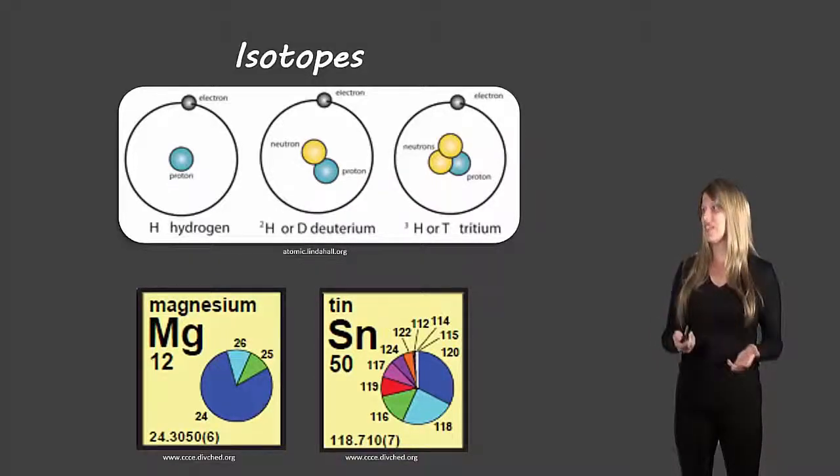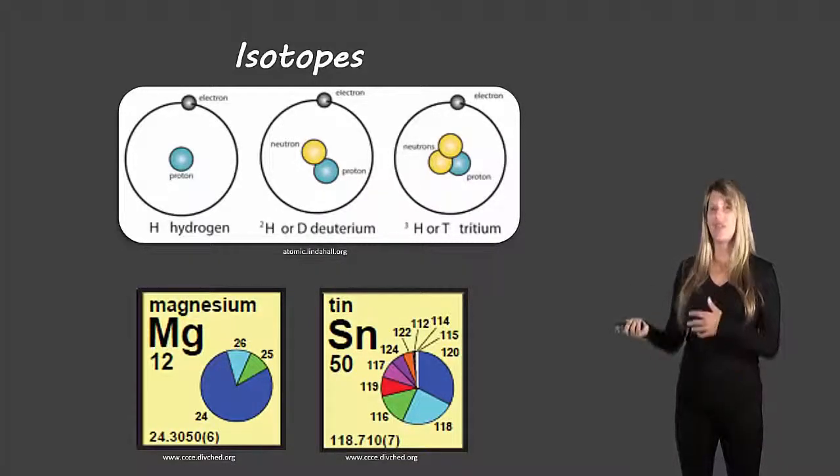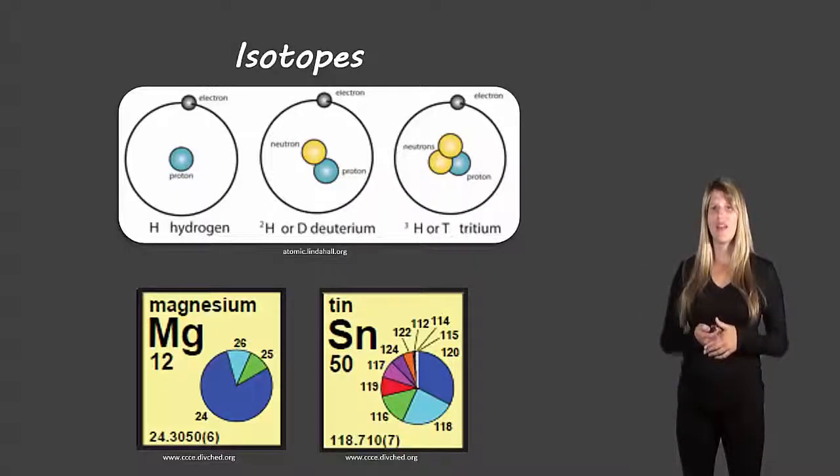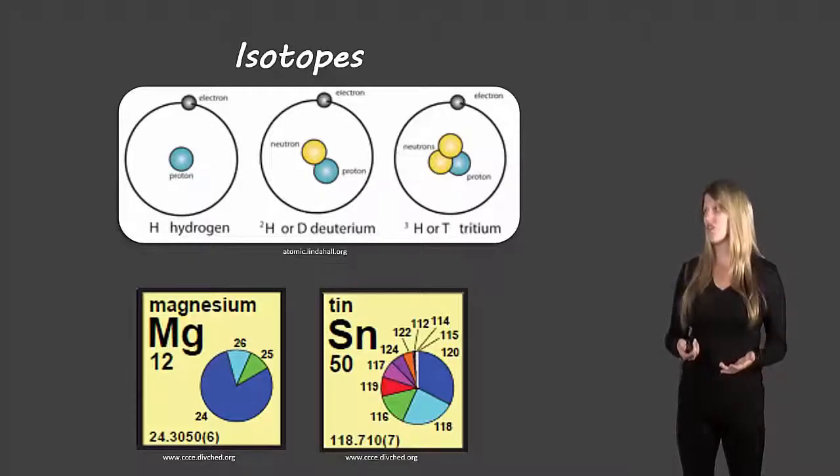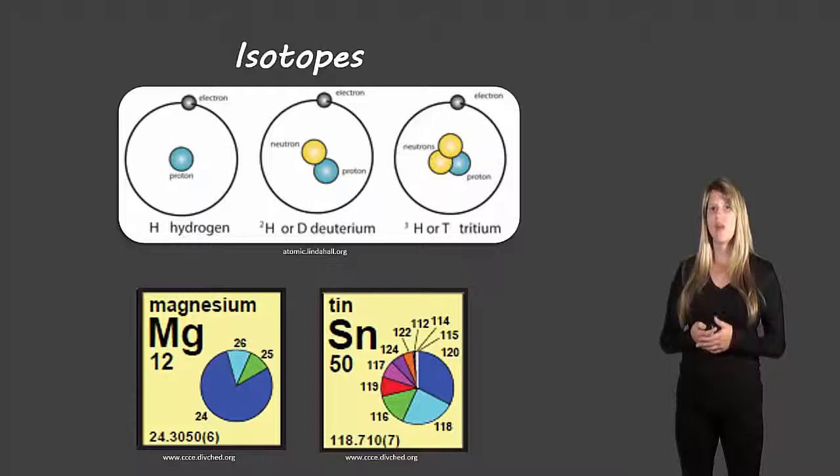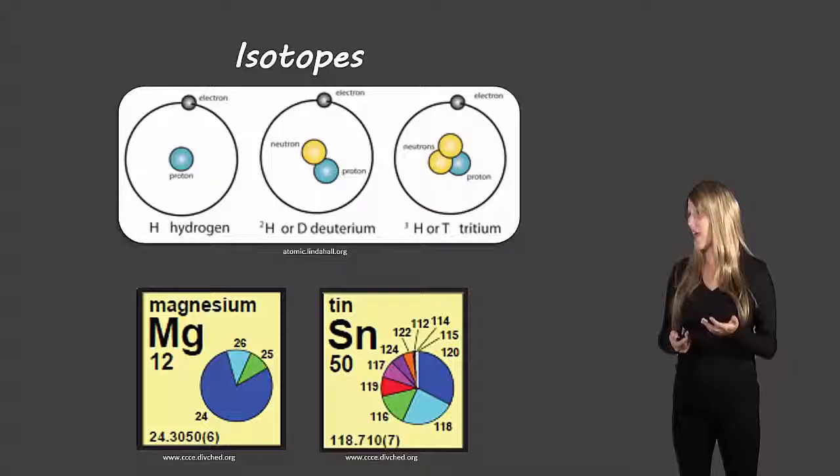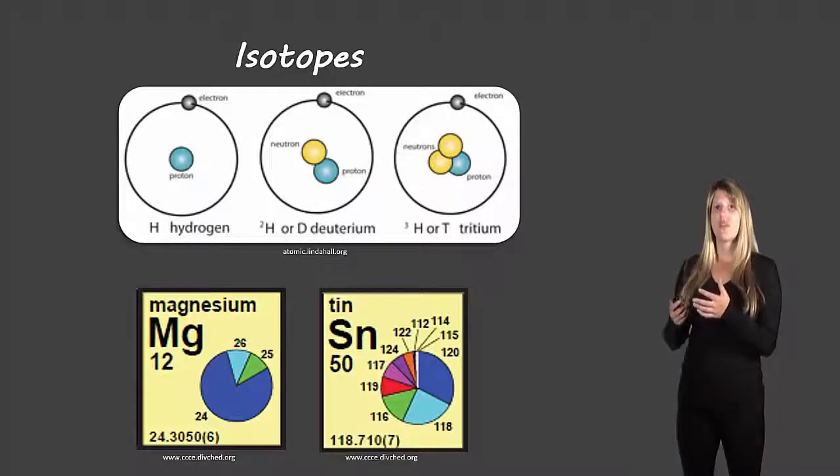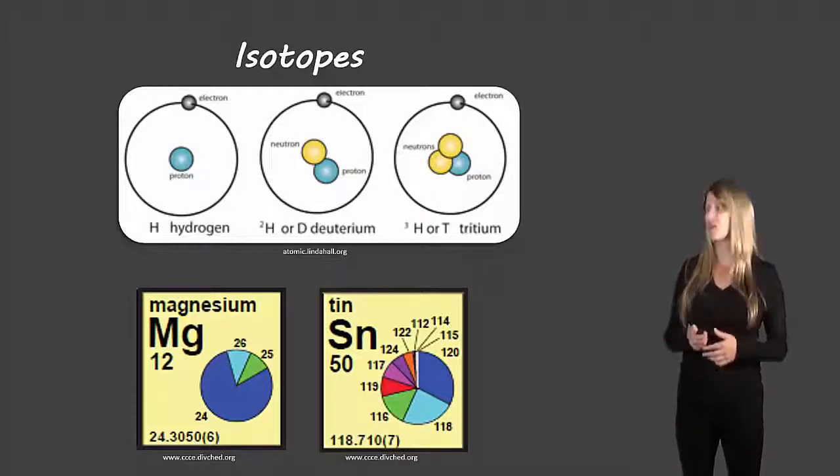Another example would be magnesium or tin. They have many more different types of isotopes. For example, tin looks like it's got about a dozen different isotopes. All of these are possibilities. Now those two pictures at the bottom actually show a special periodic table that shows the relative abundance of different isotopes. So for magnesium, there's one isotope that has 12 neutrons that's much more common than the one that has 13 or 14 neutrons. So these just show that there are different isotopes and different amounts of each of those isotopes on earth.